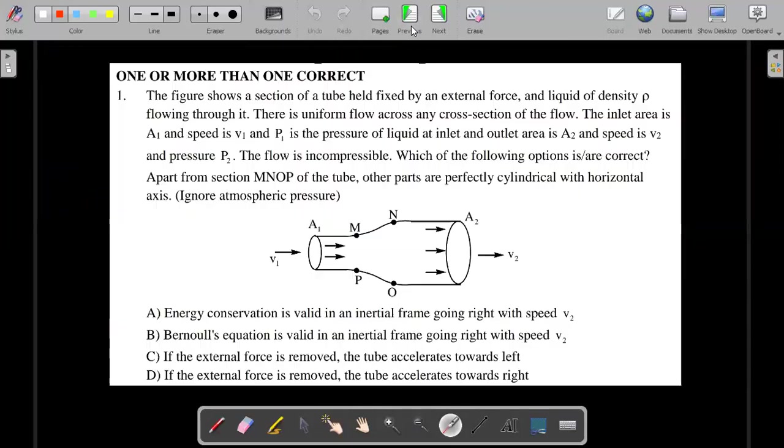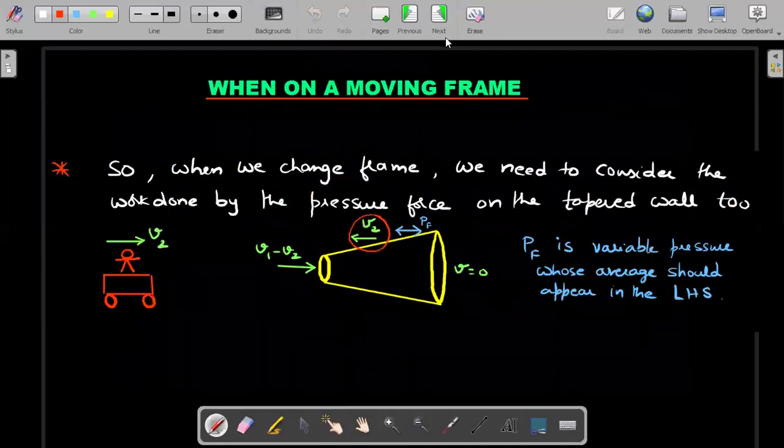Let's go back and mark our correct options. The idea is that work energy theorem or energy conservation is valid from an inertial frame. There are no pseudo forces, so energy conservation should be valid. So option A is right. Your standard Bernoulli's equation is not valid in an inertial frame moving towards right. It's obvious as I've stated, and I told you why it's not valid. So option B is wrong. Option C, you could clearly see that if external force is removed, the tube accelerates towards left. It's pretty obvious. On the liquid, the tube applies a rightward force here, whereas on the tube, the liquid applies a leftward force. So the force on the tube is left. If someone else is holding it and has released that force, the tube obviously goes towards left. So this is the correct answer.